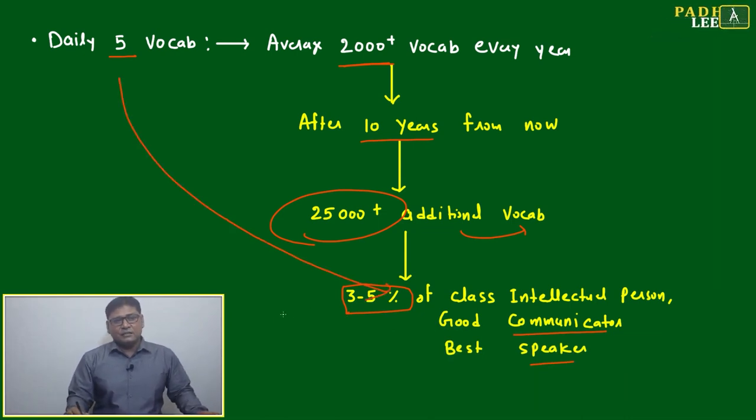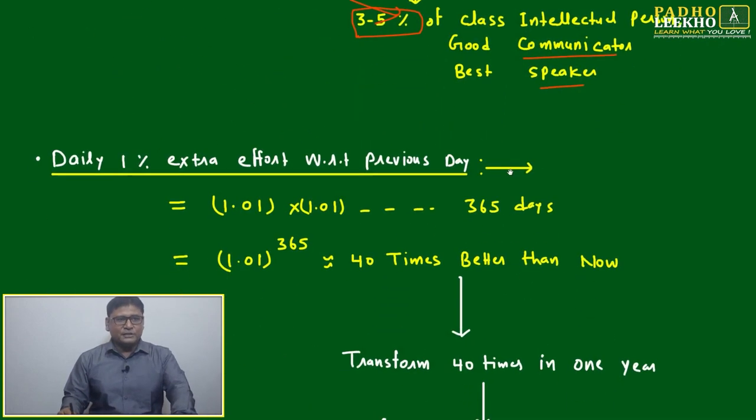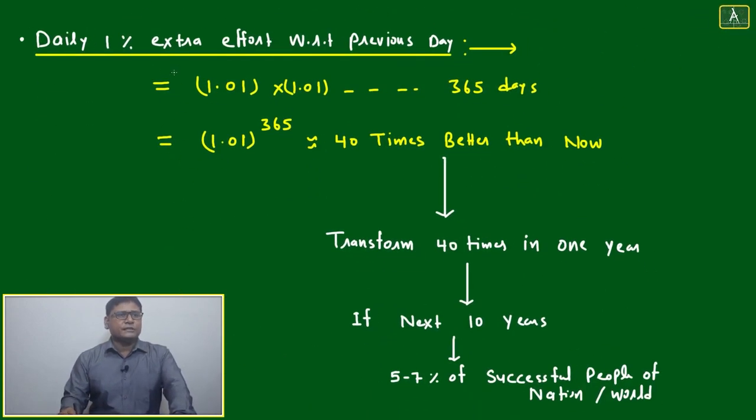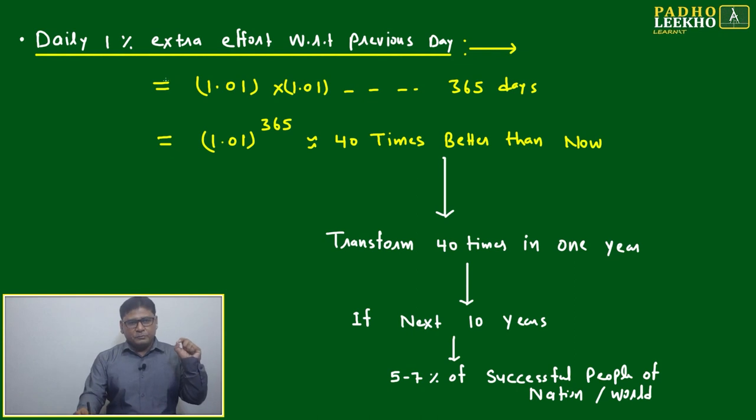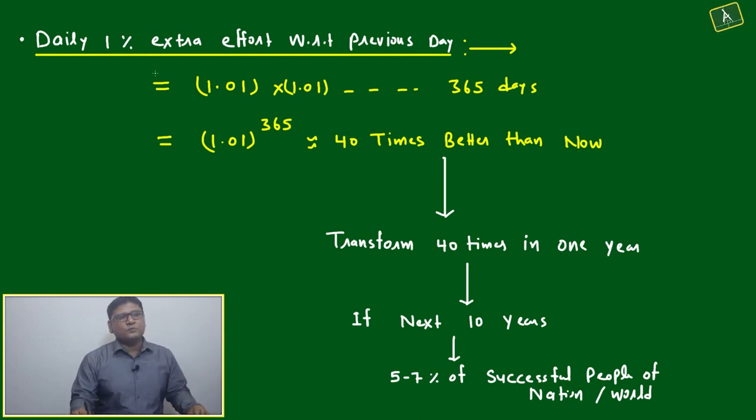And most important for your preparation point of view: both you can do—five vocabs and afterwards reading daily 20 pages. Now, if daily we are improving ourselves one percent, this is a very open question. How to improve one percent? Which area do I have to improve? We have to identify which area we have to improve.